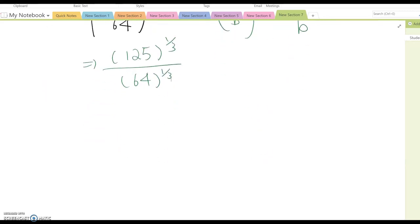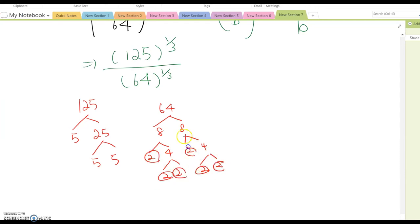Next step, prime factorization of each number. So 125 means 5 times 25, 25 means 5 times 5, and 64, 8 times 8, 2 times 4 times 4, and 2 times 2, 2 times 4 and 2 times 2. So 1, 2, 3, 4, 5, 6. So you can rewrite this as 5 cubed to the 1/3 over 2 to the 6th to the 1/3.